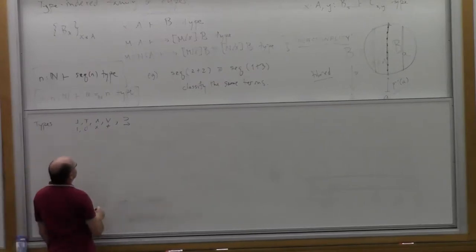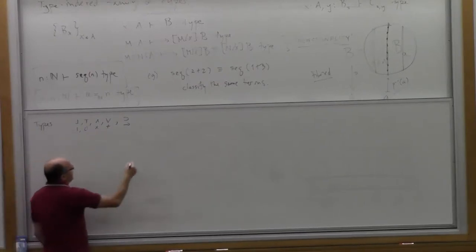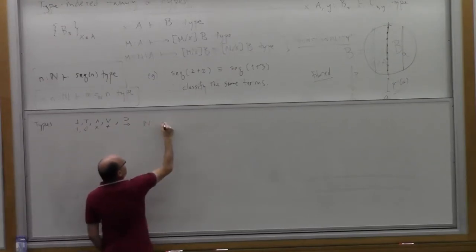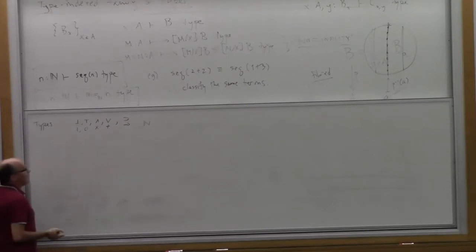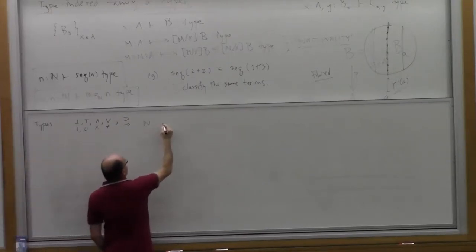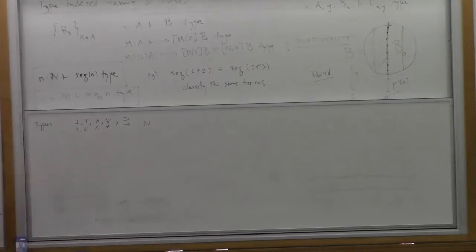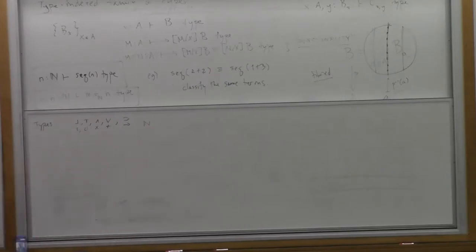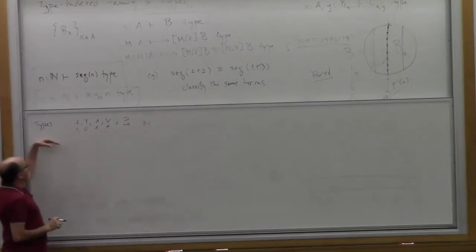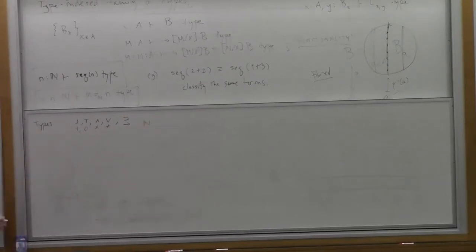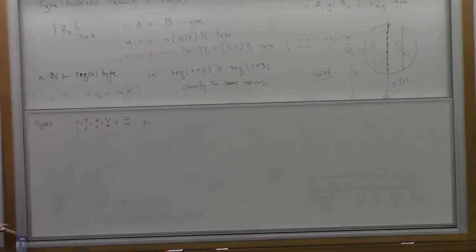We can add other sorts of types — maybe the natural numbers and others — that don't have a logical correspondence. They're merely types. This is why people think of the whole subject as being really type theory, and logic as just a mode of use of type theory, which is Brouwer's dictum — that logic is a branch of mathematics, rather than the other way around.